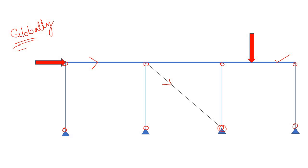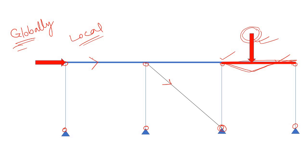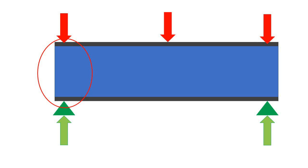Now let's say you have a vertical load and the beam is a very nominal section while the load is very large. Under this loading, the beam is susceptible to breaking — so we can say that locally this beam is not stable to carry this load. To fix this, you need to strengthen this particular beam by providing a stronger section. Now this beam is locally stable.